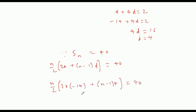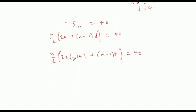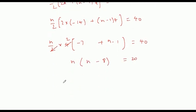Working this out, if we take 4 common from inside: n by 2 into 4, we get minus 7 plus n minus 1 equals 40. These two terms, dividing by 2, gives n into n minus 8 equals 20.